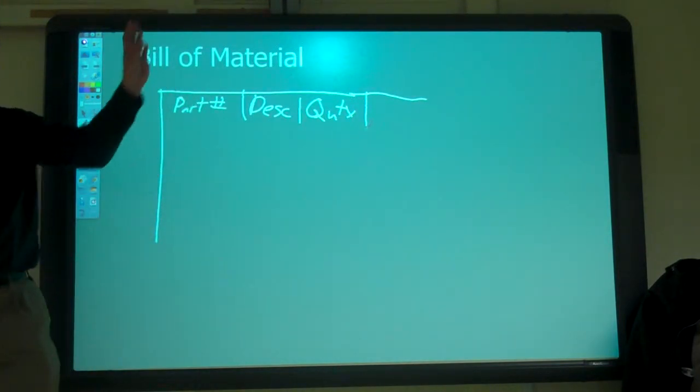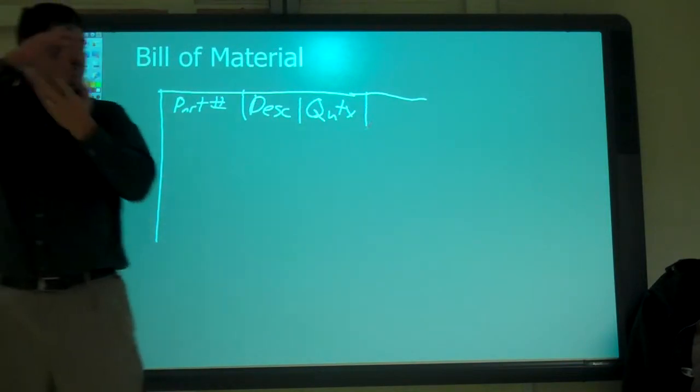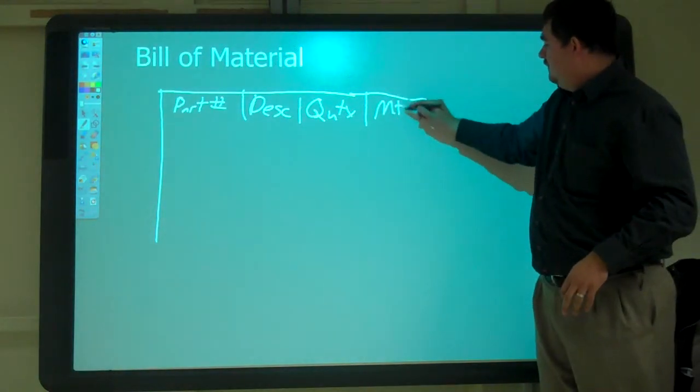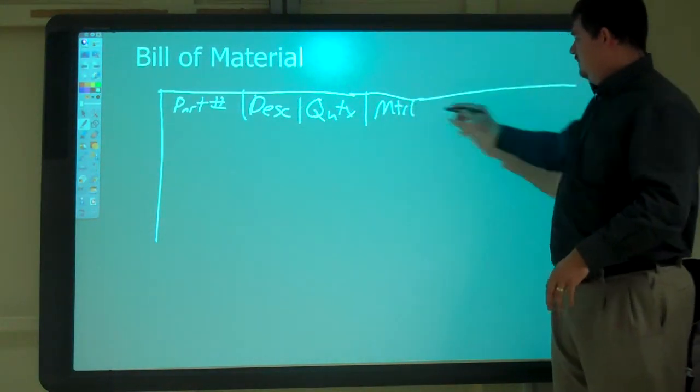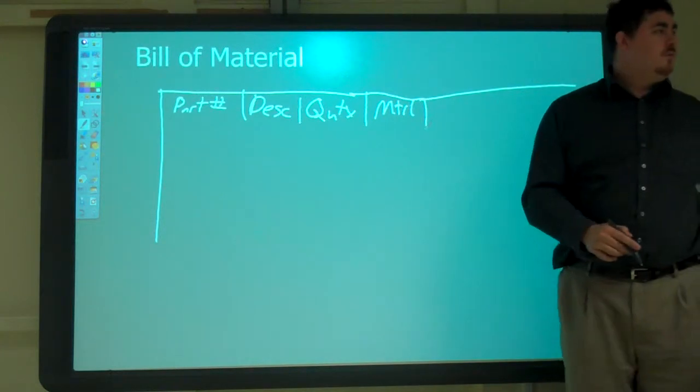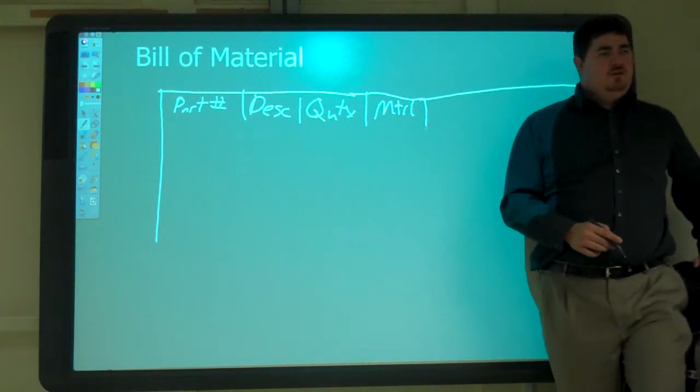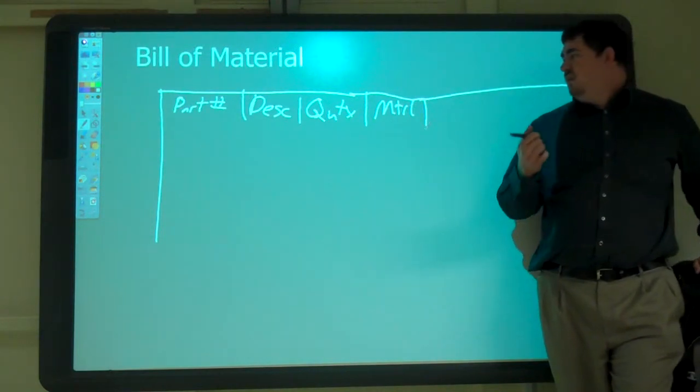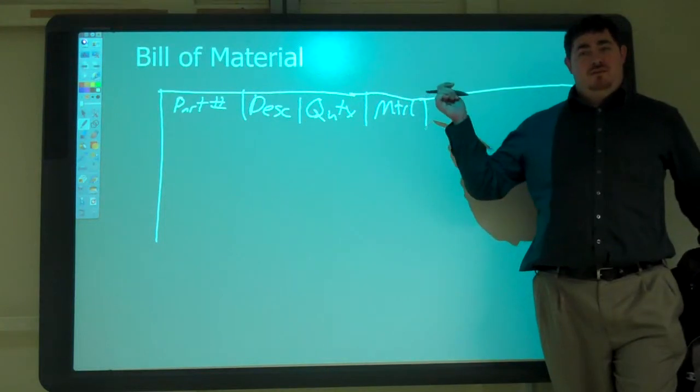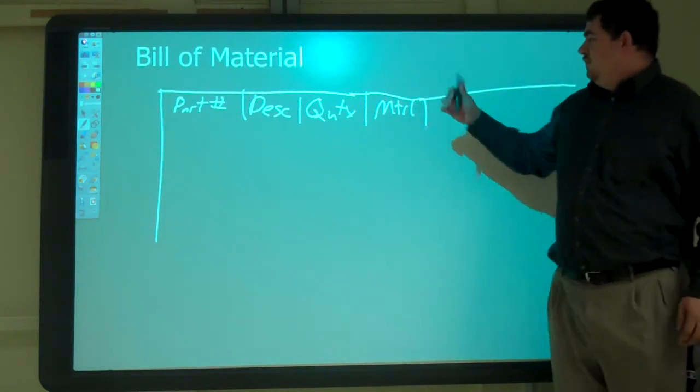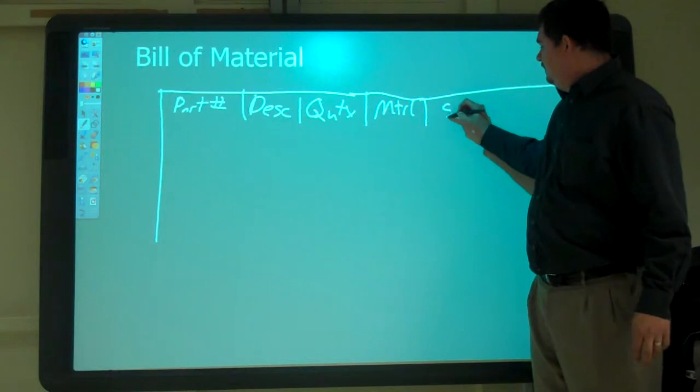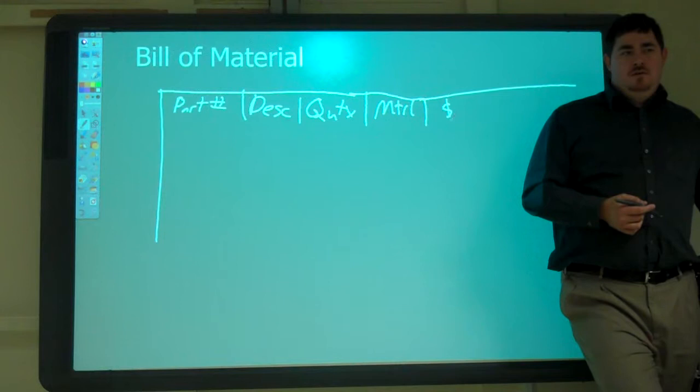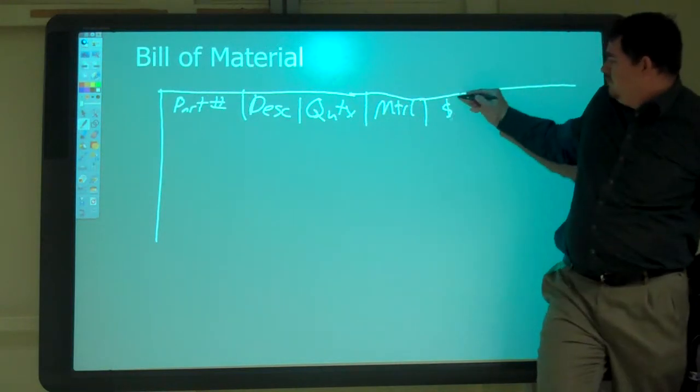This might be more than what we put on the bill of materials on the drawings. On the drawings, we've got a little bill of materials. Here we've got a bigger one. We need material, and we can calculate price or cost.